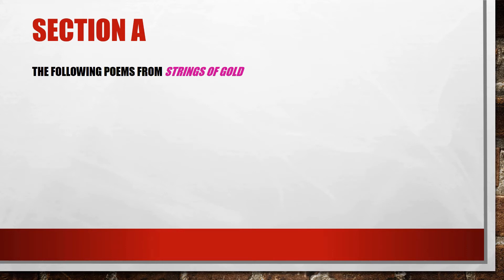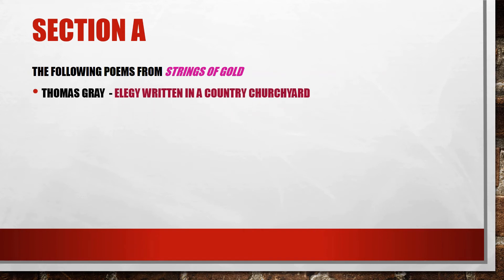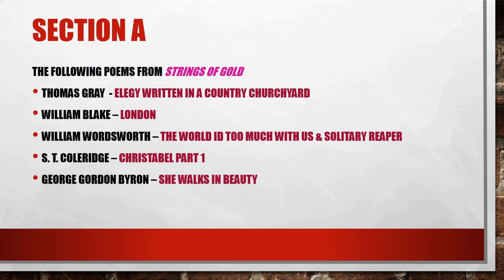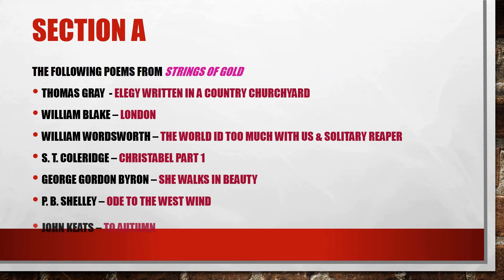Coming to the syllabus of this paper — Poetry and Drama — Section A consists of poems from the book Strings of Gold. The poems included are: Thomas Gray's Elegy Written in a Country Churchyard, William Blake's London, William Wordsworth's The World is Too Much With Us and Solitary Reaper, Coleridge's Christabel Part 1, George Gordon Byron's She Walks in Beauty, Shelley's Ode to the West Wind, and John Keats's To Autumn. These are the Western poets in the syllabus.